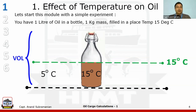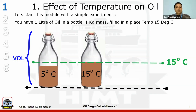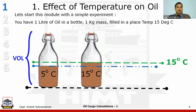This is common sense — this is what we observe in day-to-day life. When we go from 15 degrees Celsius to 5 degrees Celsius, when we reduce the temperature of the oil, the oil contracts and the volume reduces. I'm putting a small blue line to signify the oil level at 5 degrees Celsius.